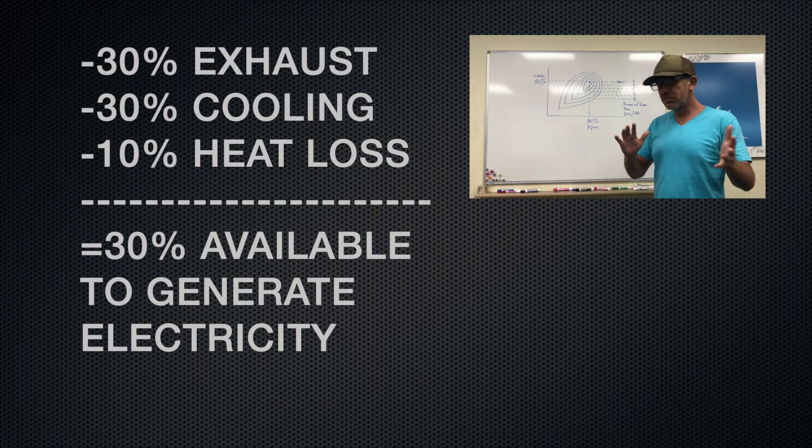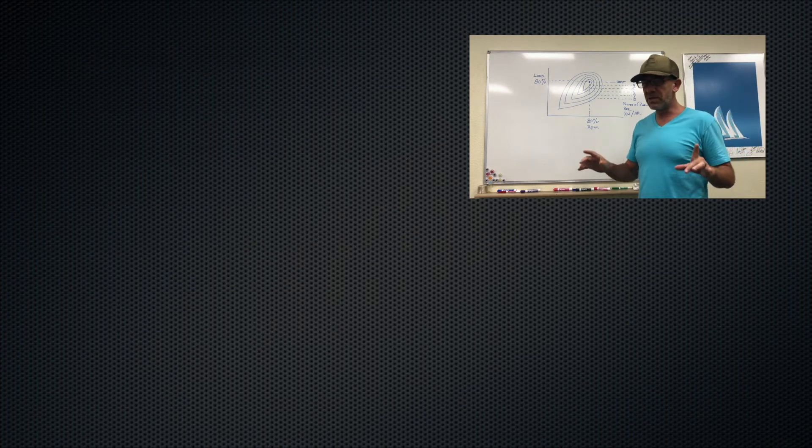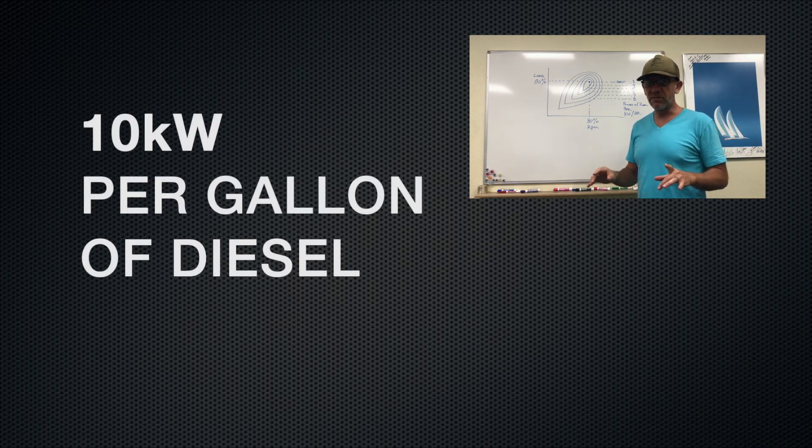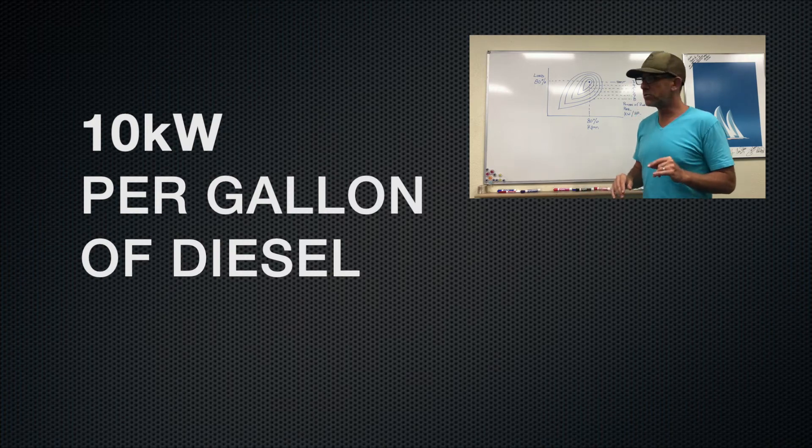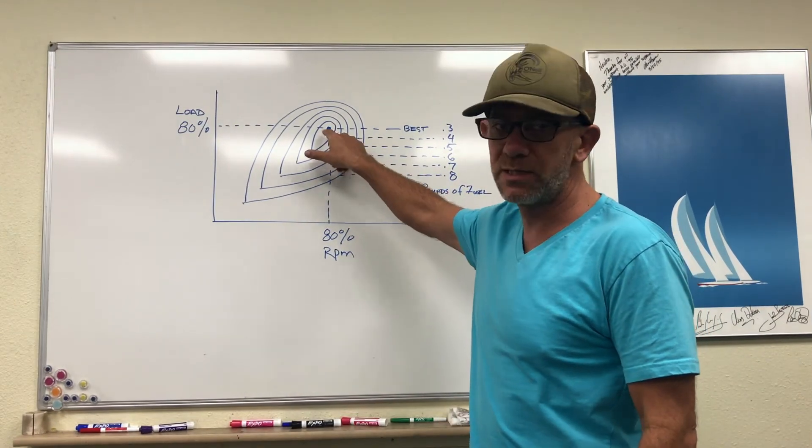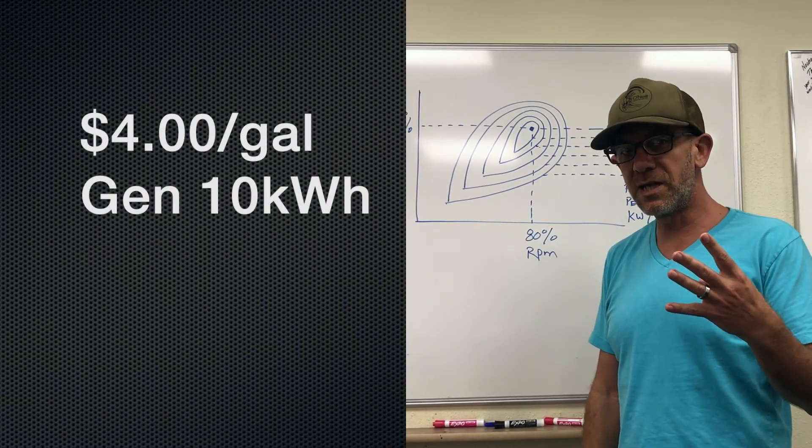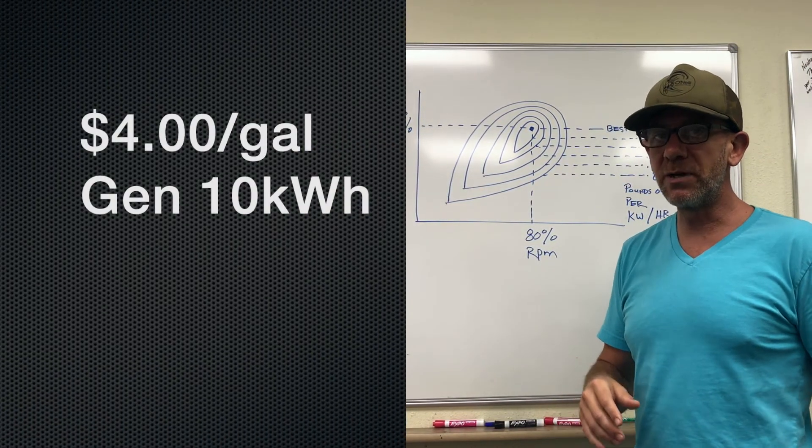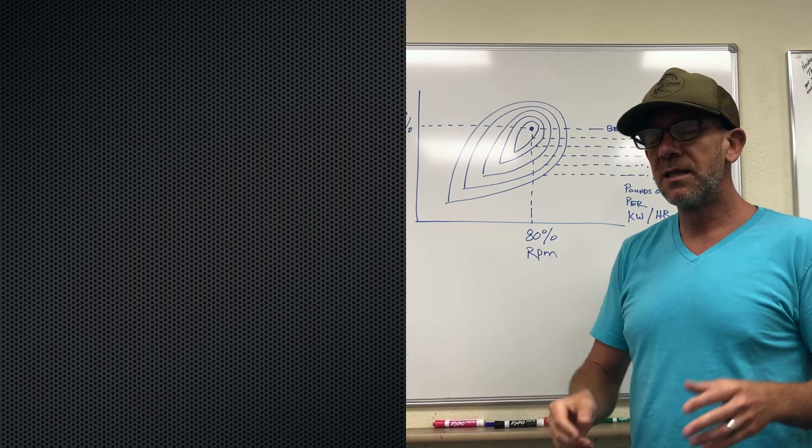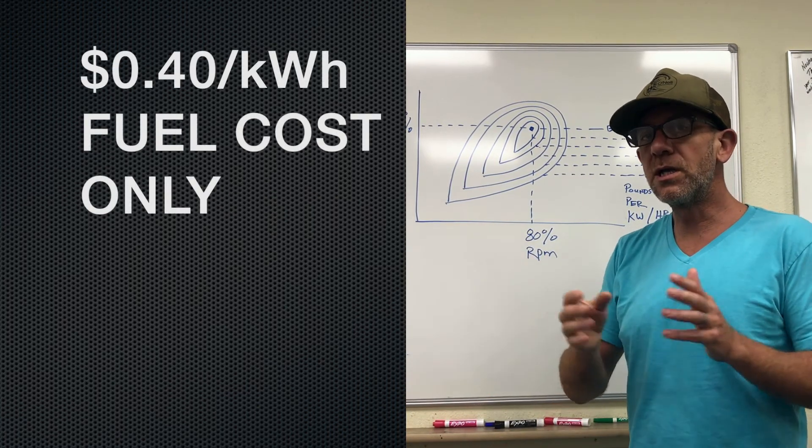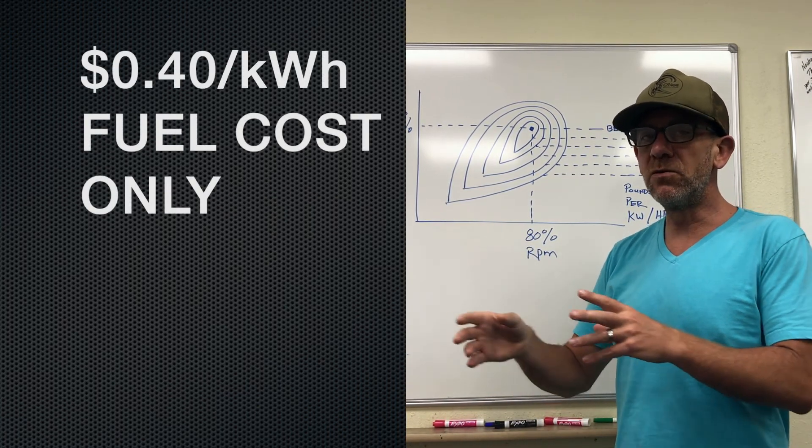So what you're left with is 30% of the available energy in that 130,000 BTUs that's available to generate electricity. Let's just say, to keep numbers round, that ends up being about 10 kilowatts of power that you have available. And that's what you're generating if you are running right at the sweet spot. So if you're buying the fuel for $4 a gallon and you're able to generate 10 kilowatts of power, that's 40 cents per kilowatt just in fuel cost.